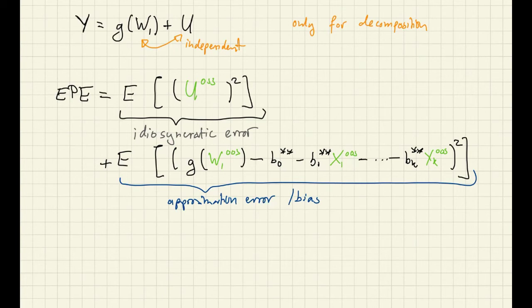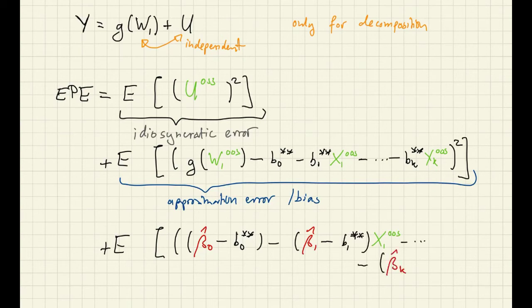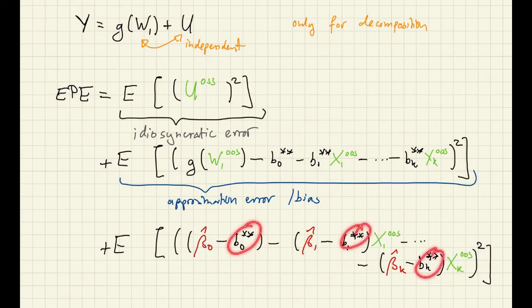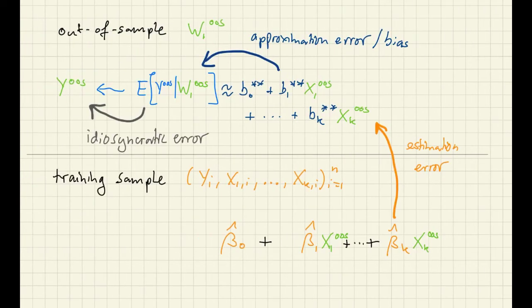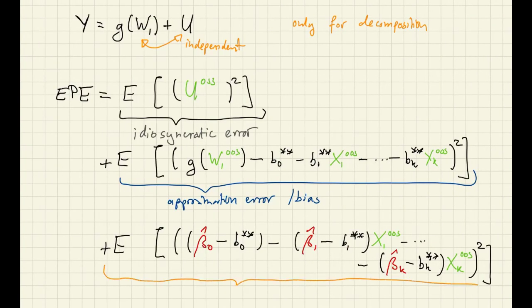And then there's a final third part of the EPE. This part exists because our coefficients for the best linear prediction are different typically from the OLS estimates. So this represents this step here, estimation error. And this is also sometimes called the variance component of the EPE.